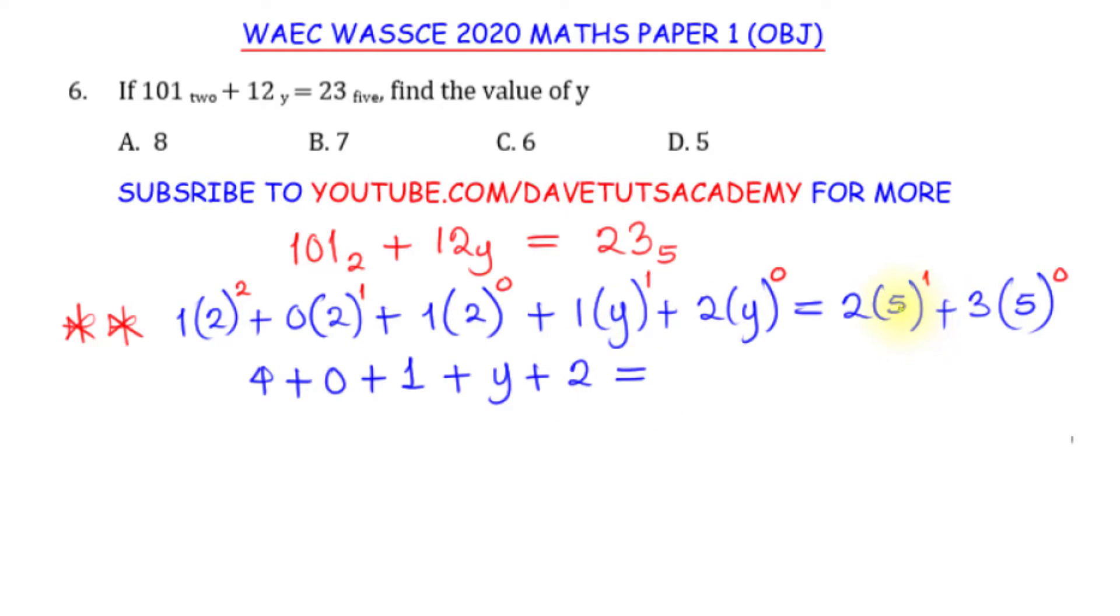Is equal to 5 raised to power 1 is 5, 5 times 2, that is 10, plus 5 raised to power 0 is 1, 1 times 3, this is 3.